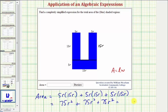The variable part is going to stay the same, and the coefficient is going to be 75 plus 75 plus 75, which equals 225. So the total area of the blue shaded region is 225R squared, and this would be square units.